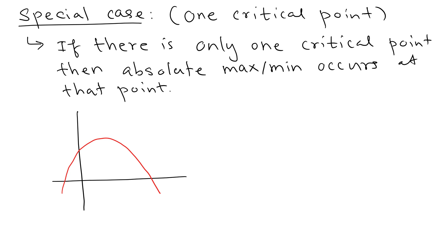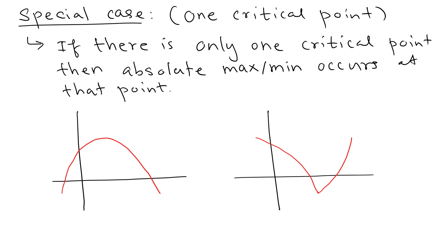For example, if there is only one critical point and you set the derivative equal to zero at point a, and you can see there are no more critical points, then the absolute maximum happens at a — because there's no other place an absolute maximum can occur. Similarly, if at point b the derivative does not exist, and that's the only critical point, then that is exactly the absolute minimum.